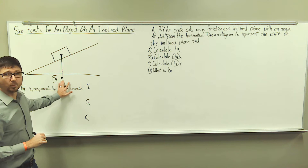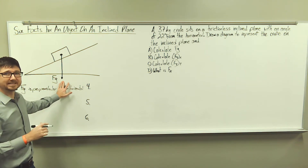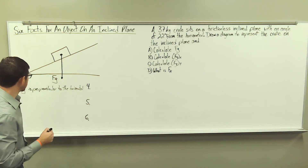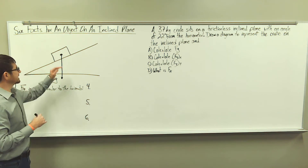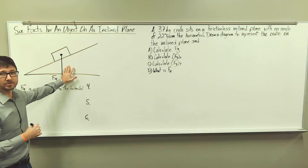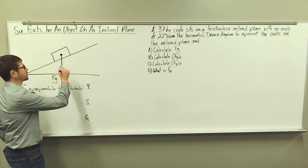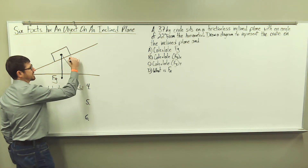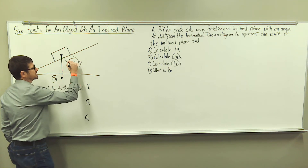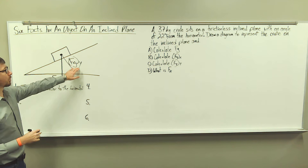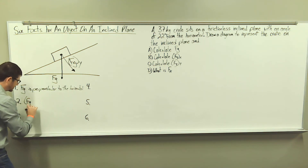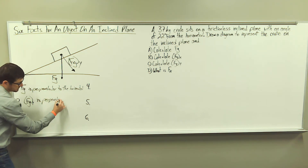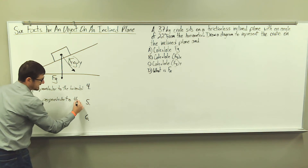This weight force vector can be broken down into its X and Y components since it's on an inclined plane. So fact number two is the Y component of weight force — it points down and it is perpendicular to the inclined plane. We're going to label this F sub G sub Y. So the Y component of the weight force, F sub G sub Y, is perpendicular to the inclined plane.